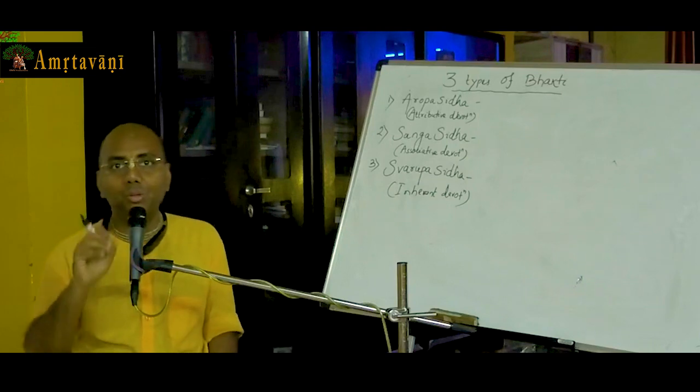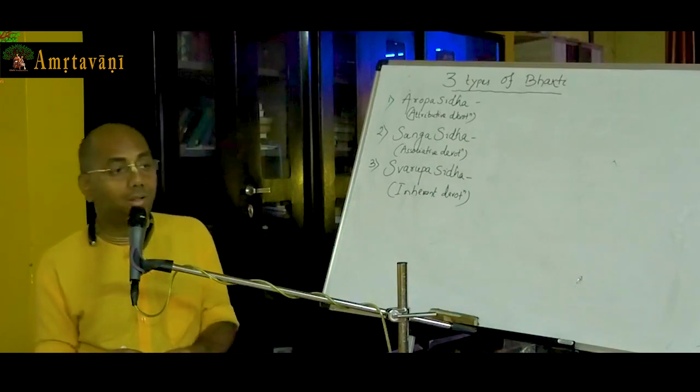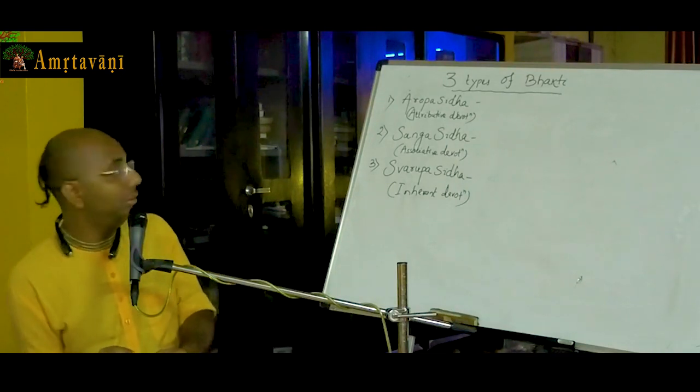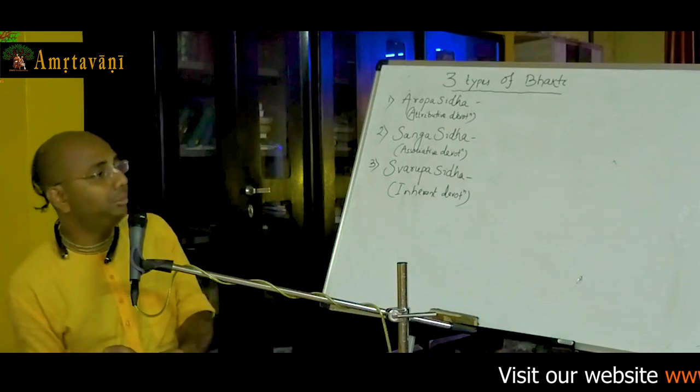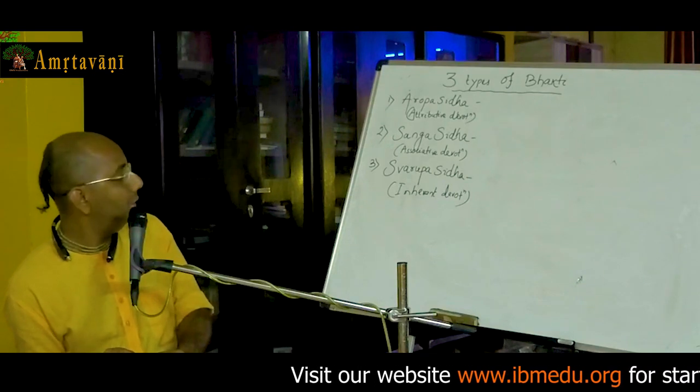Zooming more towards the Narayana Parana, there are three types of Bhakti: Aropa Siddha Bhakti (Attributive Devotion), Sanga Siddha Bhakti (Associative Devotion), and Swarupa Siddha Bhakti (Inherent Devotion).